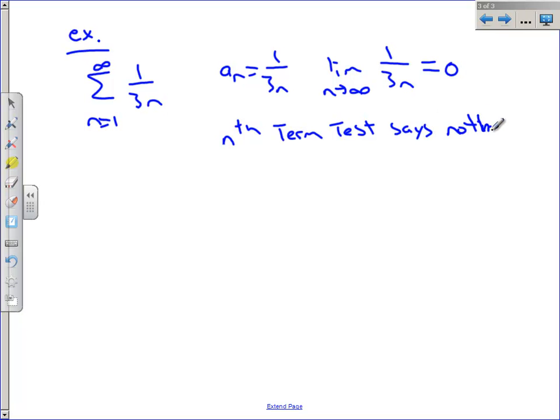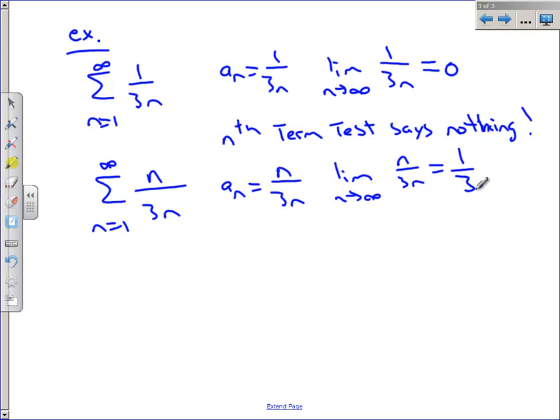Let's do another one. What about from 1 to infinity of n over 3n? Well, our summation here has a sequence of n over 3n. And that limit as n approaches infinity of n over 3n is 1 third. Now, this nth term test does say something. Since this is not 0, we can say that this series diverges.